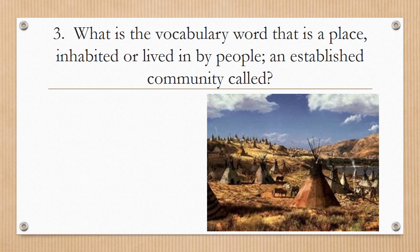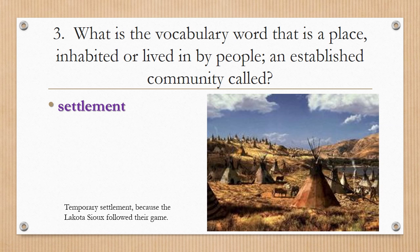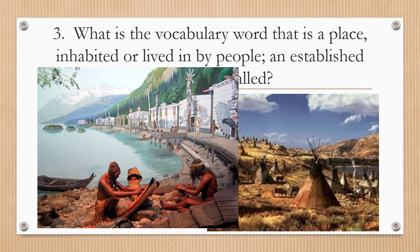Number three: what is the vocabulary word for a place inhabited or lived in by people — an established community? A settlement. The settlement on the Great Plains would be a temporary settlement because the Lakota Sioux followed their game, primarily the buffalo. The Kwakiutl settlement, by contrast, is a more permanent settlement — you can tell by their structures and living environment.